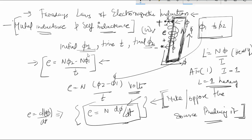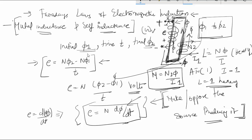If another coil — not connected to any voltage source — is brought near the first coil, its turns are N2 and the flux phi flows through the core. The mutual inductance is M = N2·φ / I1, where I1 is the current through the first coil. This inductance is known as mutual inductance, and it is the basis for the working of equipment like transformers.